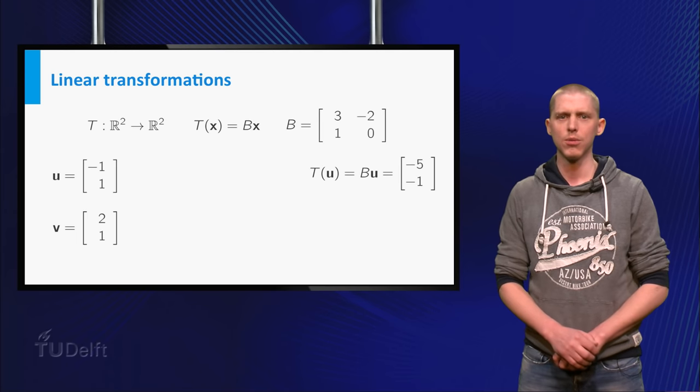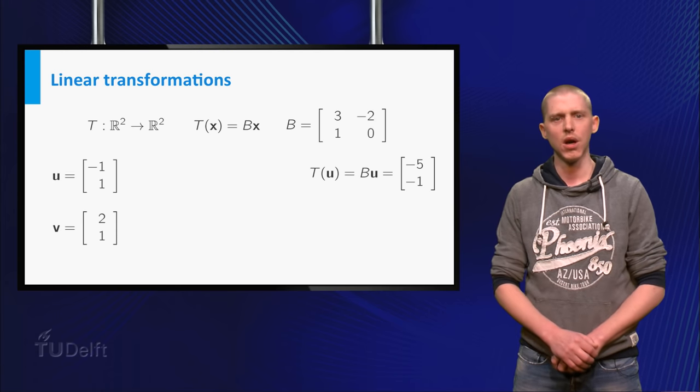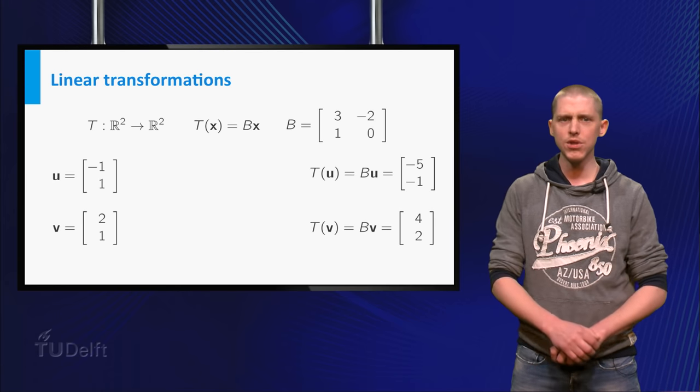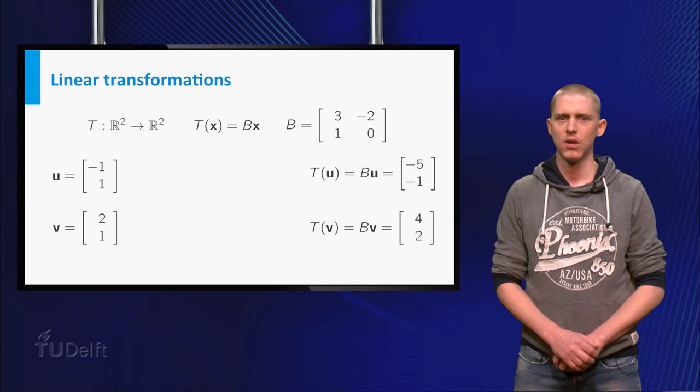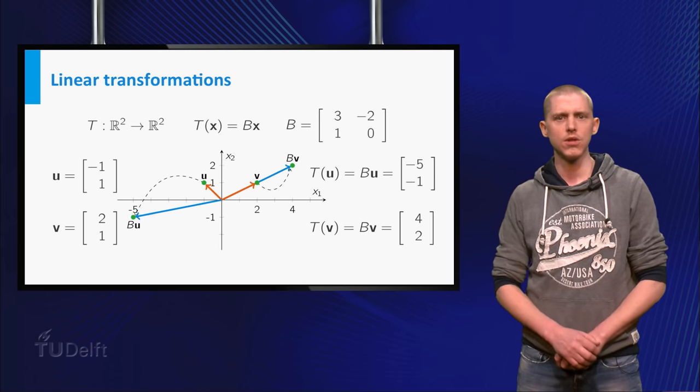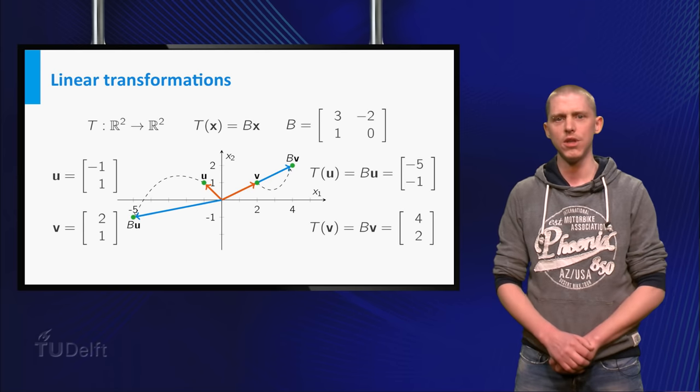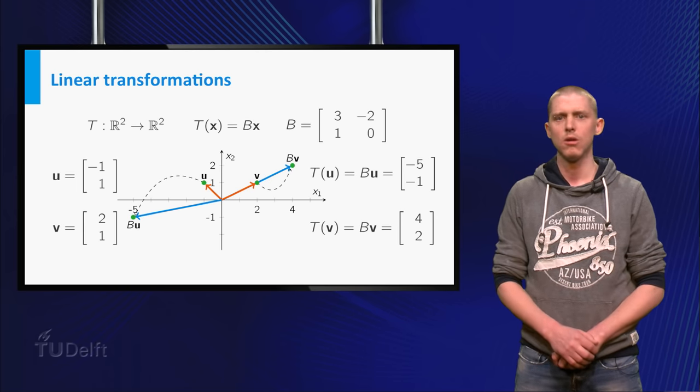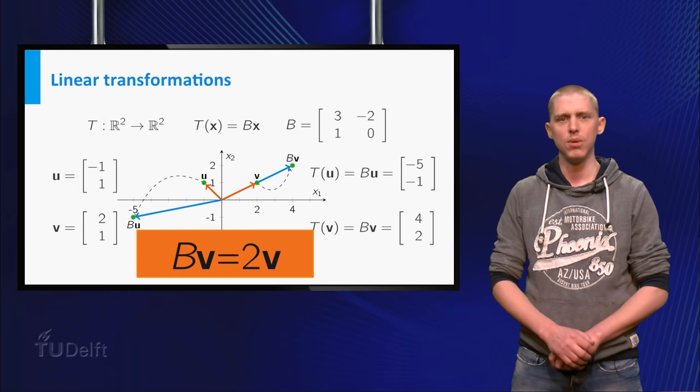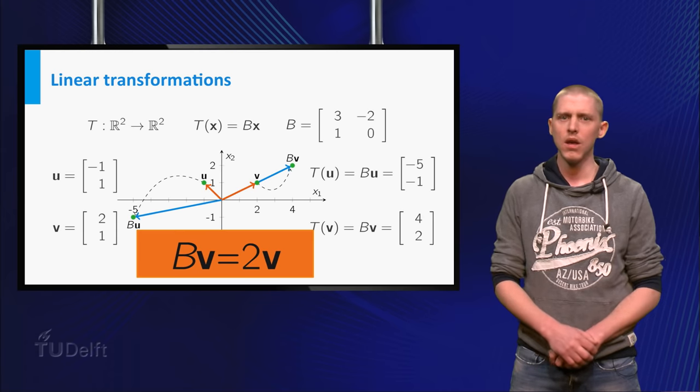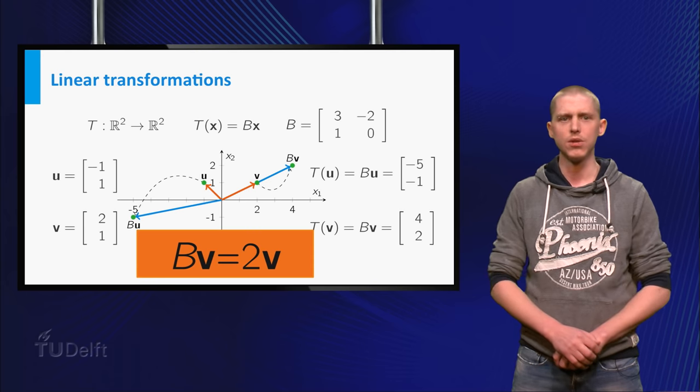You can calculate the image of U under T, which is of course B times U. This vector is minus 5, minus 1. If you do the same for the image of V under T, the answer is the vector 4, 2. Because it is easy to draw these vectors, you can see that V is special, in the sense that the direction of B times V is the same as V. However, B times V is two times as long as V. So B times V is two times V. If you compare U and B times U, you will not see any direct relation between these two vectors.